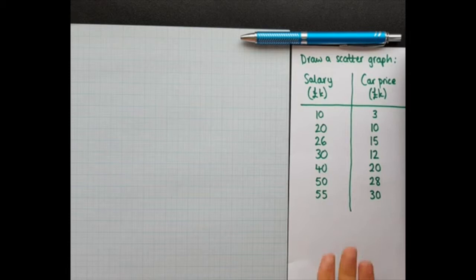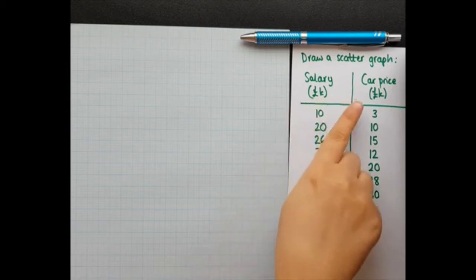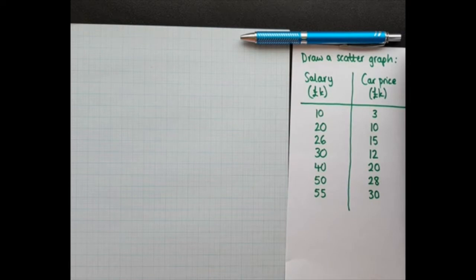So we have a data set here and the question is to draw a scatter graph. This data set shows the salary of some staff and the price of the car they bought, and we're going to look and see if there's a relationship between the salary and the car price. So the first thing we do when drawing any graph is to draw a pair of axes. I'm going to use a pencil and a ruler because you always use a pencil and ruler when drawing graphs.